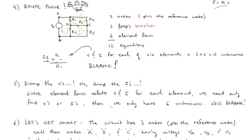So how do we go about doing that? Well, first, let's dump the V's, or dump the I's. So since element laws relate V and I for each element, we really need only find the V's or the I's. Then, we only have six unknowns.